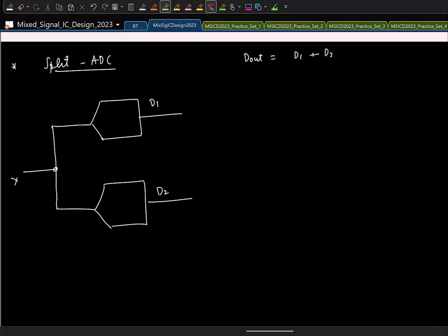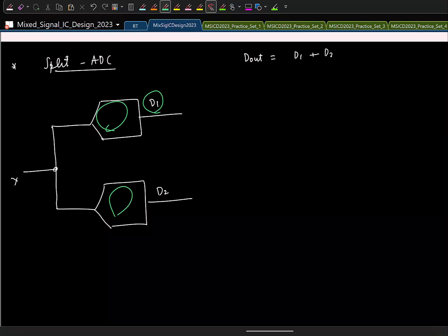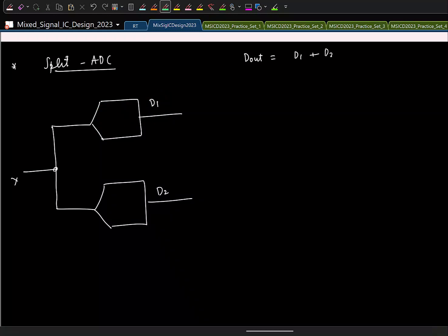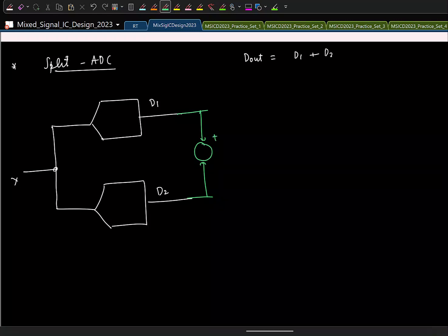Now, you want to reduce the mismatch in these two ADCs. Again, the deal is simple. If the ADCs were matched, D1 and D2 will be same. So, the same principle, you take the difference between these two. Now, ideally, what do you want this error to be? Zero. I want to make the error signal to be zero. So, what can I do?